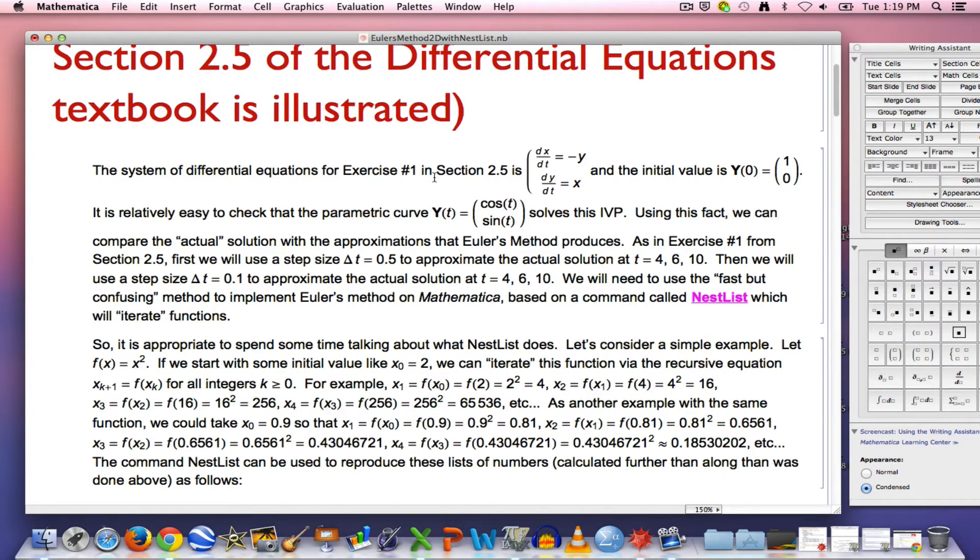So this is referring to an exercise in my differential equations book that I use by Blanchard, Devaney, and Hall in section 2.5, which is about Euler's method in two dimensions. It's a simple system of differential equations. dx dt equals negative y, dy dt equals x, that's linear. Initial condition y of 0 is 1, 0. The true solution is this particular parametric curve. That's easy to find for this particular case. You can check it.